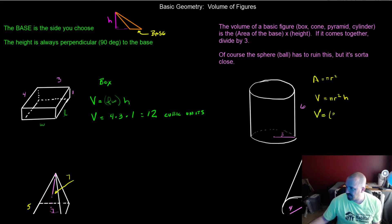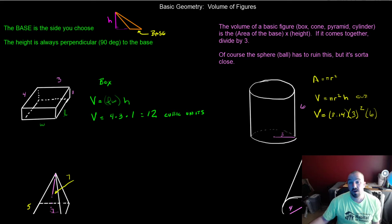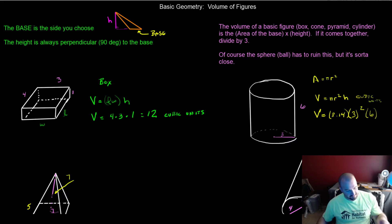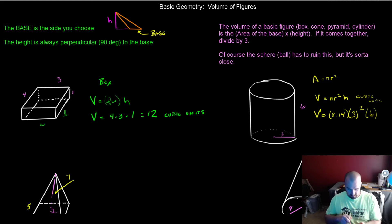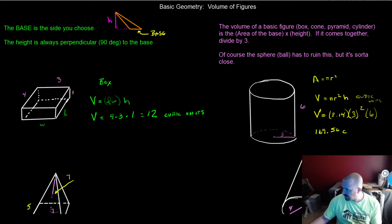This is going to be pi, which I'll take as 3.14 — or you can leave it as pi. Then your radius, which is 3, you've got to square that, and then multiply by your 6. This is going to be in cubic units, making sure that your radius units and your height units are the same. That comes out to 3.14 times 3 squared times 6, which is 169.56 cubic units.